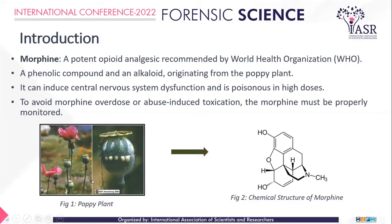Starting with introduction, morphine is an opioid analgesic that is even recommended by WHO. It is basically a phenolic compound and an alkaloid that is originated from the poppy plant. However, as it can induce central nervous system dysfunction and is also poisonous in higher doses, we need to monitor its concentration in different samples so as to avoid its overdose and abuse-induced toxication.